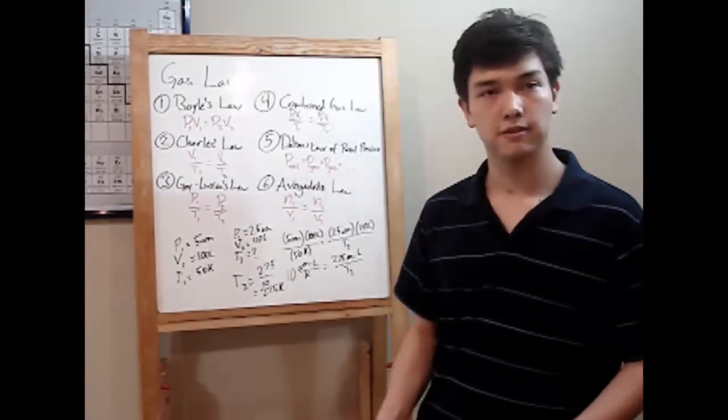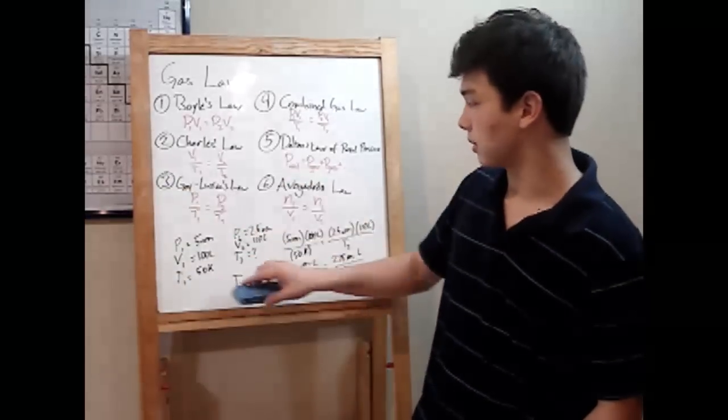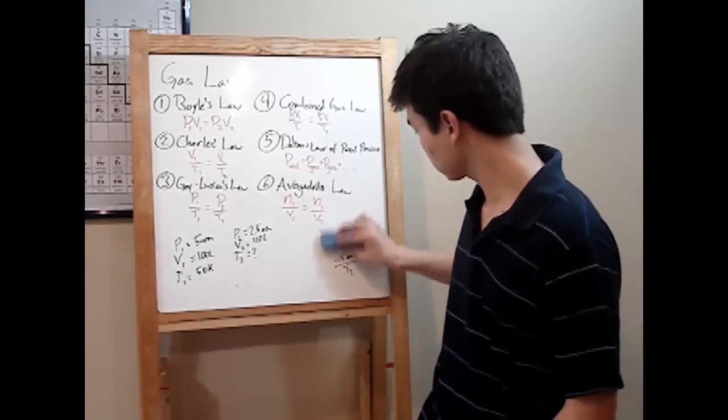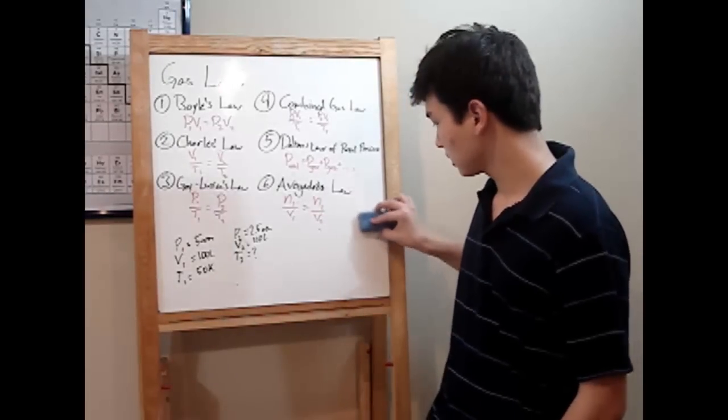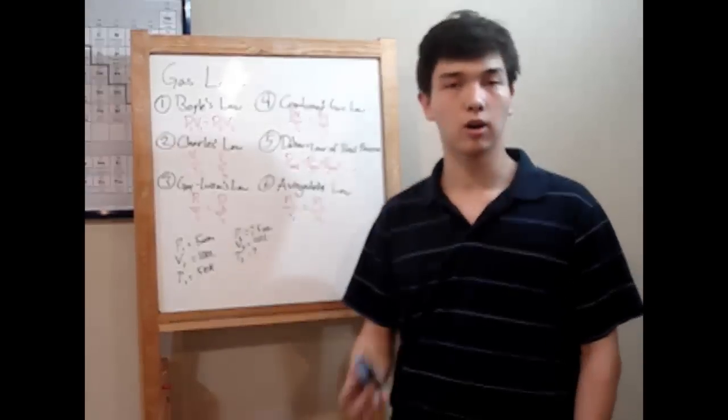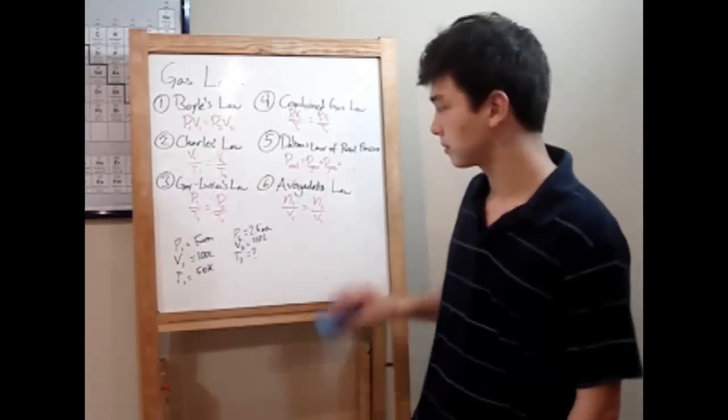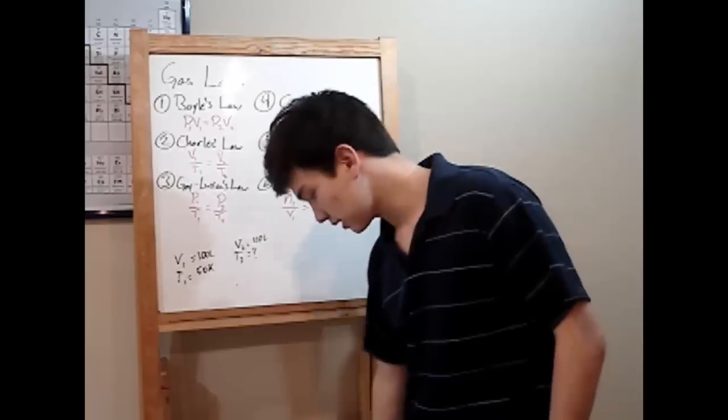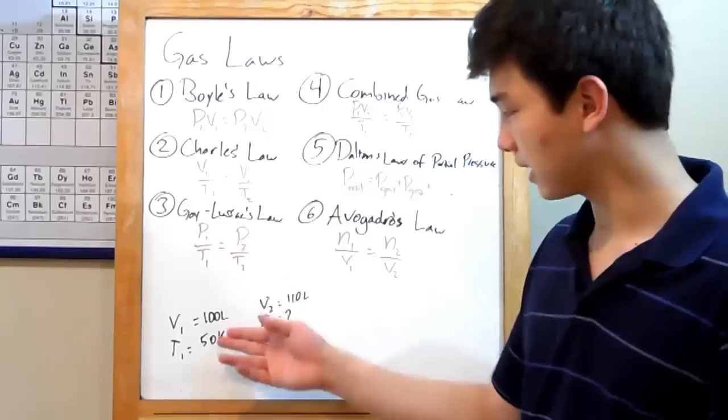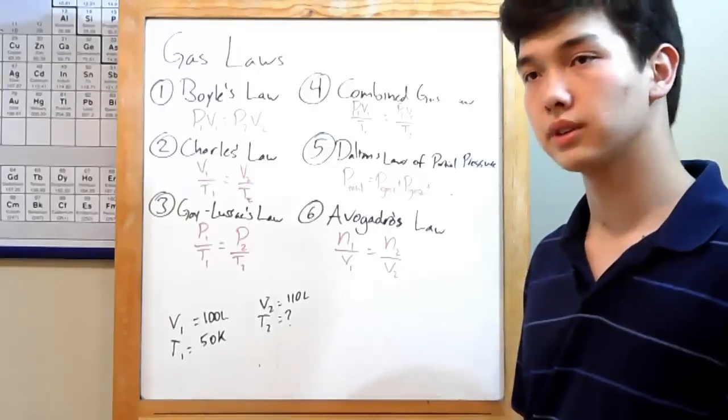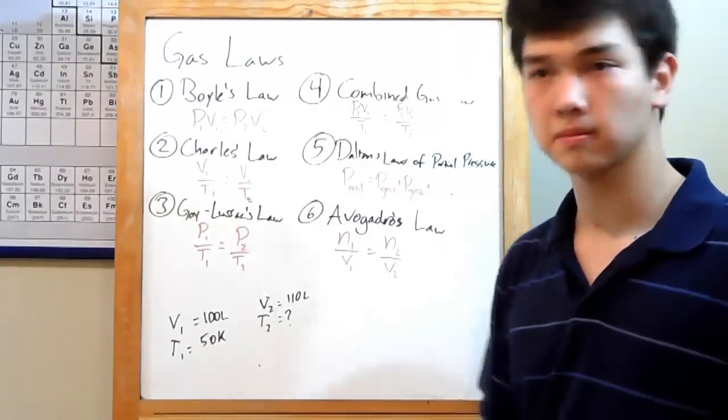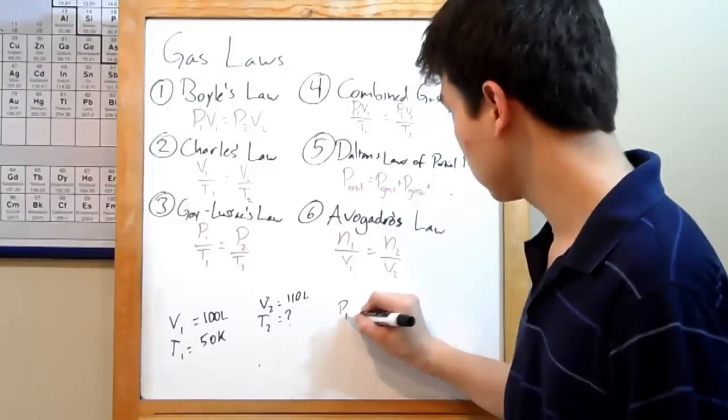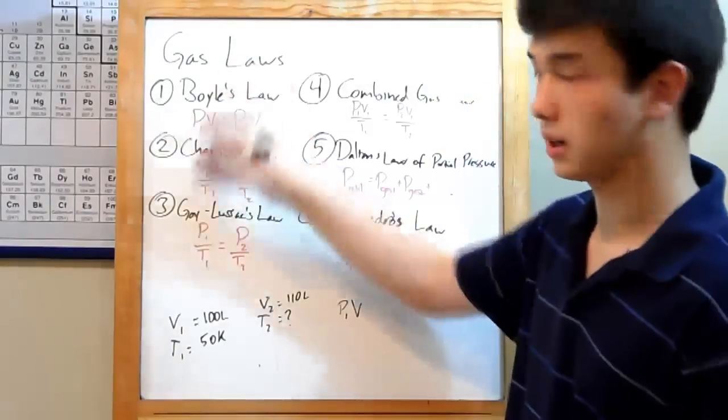So, what if you wanted to use a different one? Let's say one of these variables was instead held constant. Let's say that instead of working with all three, pressure, volume, and temperature, your pressure was held constant. You had a container with a volume of 100 liters at 50 kelvins, and you were moved to a new container with 110 liters. In this case, you'd bring back the combined gas law, just to make it easy on yourself, if you didn't want to memorize these.